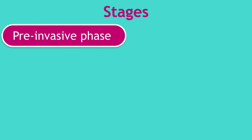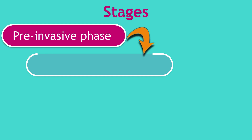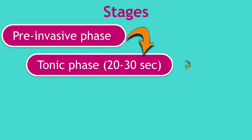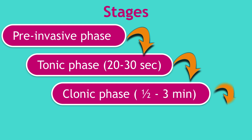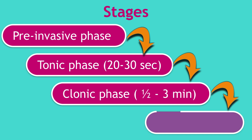One has to worry about the postpartum group the most because they have the highest maternal mortality. A typical eclampsia seizure has the following stages: a preinvasive phase with some premonitory symptoms, followed by a tonic phase lasting about 20 to 30 seconds, followed by a characteristic clonic phase lasting about half a minute to three minutes, and then the patient goes into deep sleep or coma for hours.